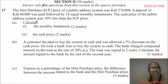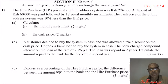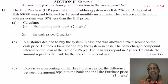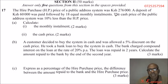Question number 17, this is Section 2, 50 marks. You are supposed to answer only five questions from this section in the spaces provided. Each question is 10 marks. Number 17: the hire purchase price of a public address system was 276,000 shillings. A deposit of 60,000 Kenyan shillings was paid, followed by 18 equal monthly installments. The cash price was 10 percent less than the hire purchase price. Part (a): calculate the monthly installment.